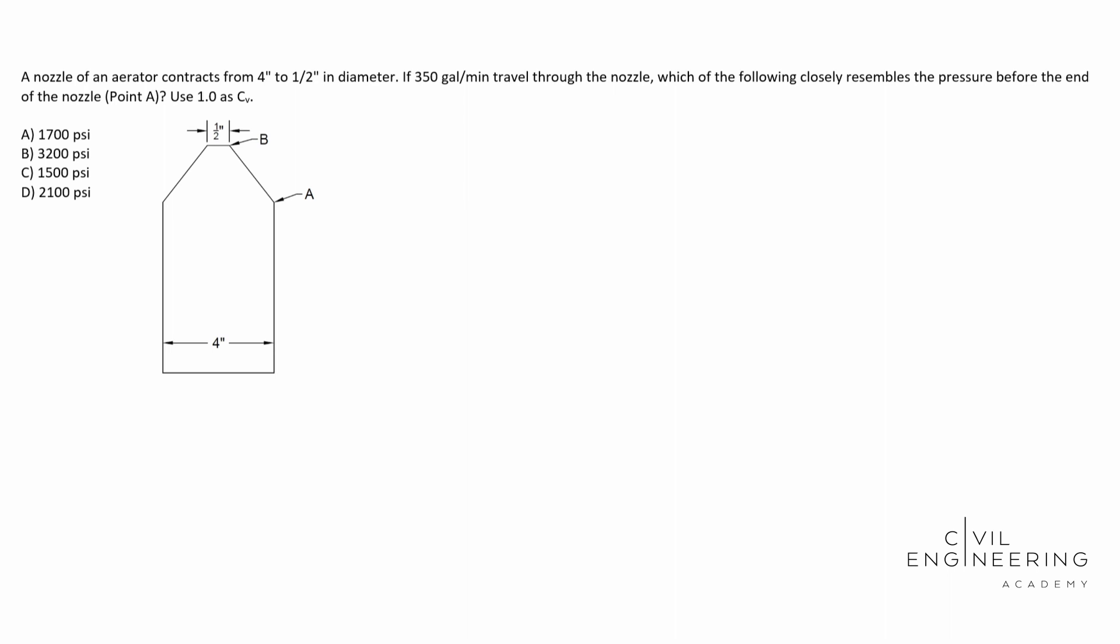So here's what the question says. A nozzle of an aerator contracts from four inches to a half inch in diameter. If 350 gallons per minute travel through the nozzle, which of the following closely resembles the pressure before the end of the nozzle? And then it gives us point A there. Use 1.0 as CV. Then we see our four options in pounds per square inch.